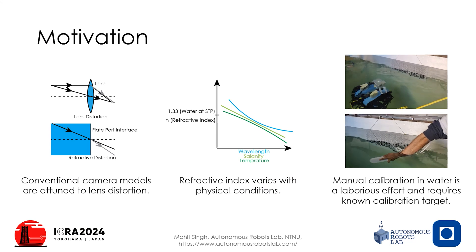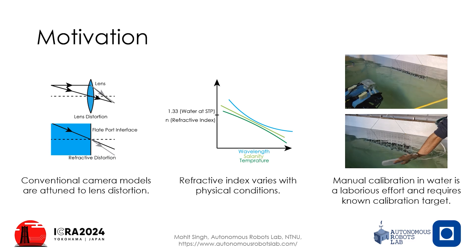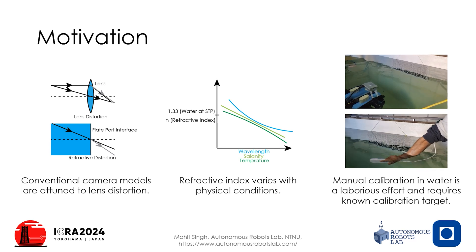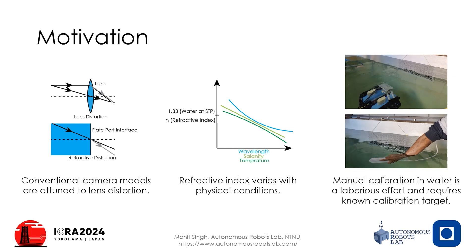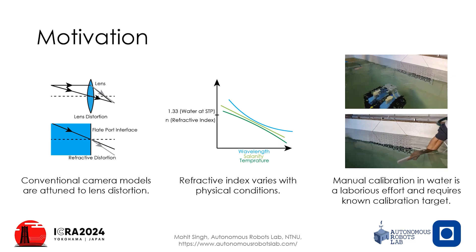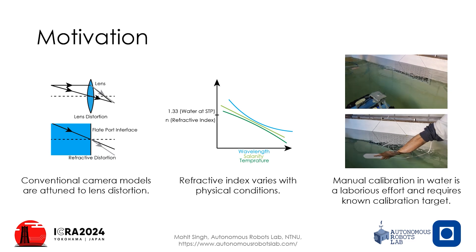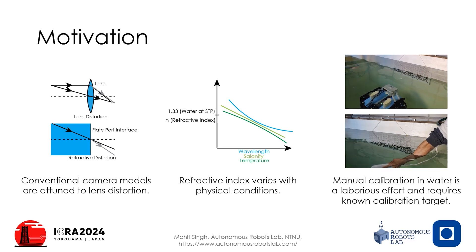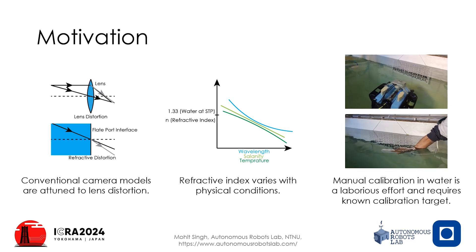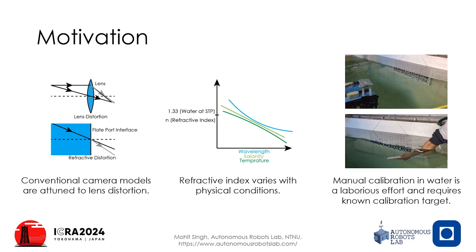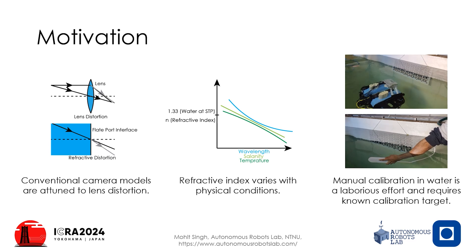Underwater computer vision is challenging, yet it provides crucial and high-fidelity perception in an economic manner. One key challenge in underwater computer vision is camera calibration. Classically, cameras are calibrated using a calibration target underwater and often use a static model. The conventional calibration tools are attuned to less distortion and are insufficient for capturing refractive distortion by a flat port interface.